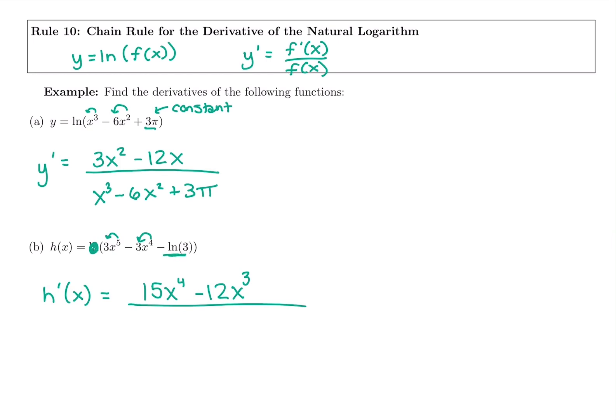And then another weird looking constant here. You could plug it into your calculator and see that it's just a number. There's no x on it. So its derivative is just 0. That's the derivative of the inside over the original inside. So 3x to the 5th minus 3x to the 4th minus ln of 3.